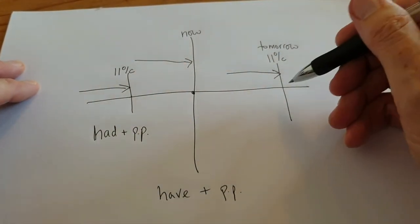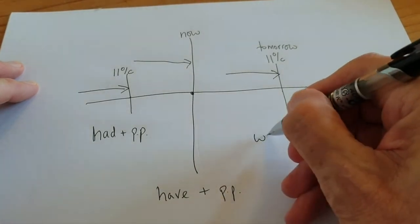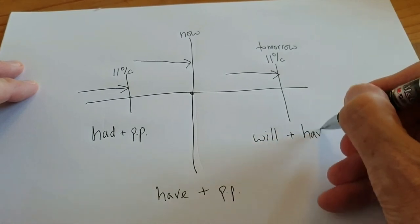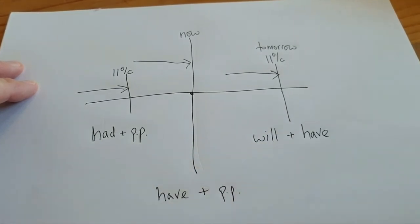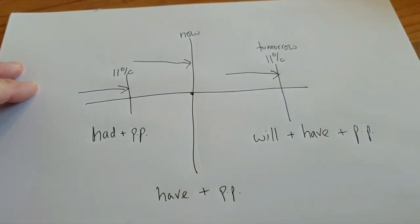Logically then, for the future perfect, because it's into the future, you need will. You need the verb to have. After will it's always infinitive. So, will plus have plus the past participle, the third form. I will have eaten my breakfast by 11 o'clock tomorrow.